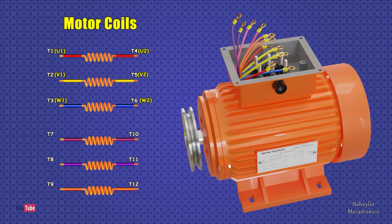The same happens with the terminals of the last three coils. It is designated from terminal 7 to 9 on one side. At the other end of the coils, terminals 10 to 12 are named if based on the NEMA standard, or have letters U, V, and W sub 3 and sub 4 if manufactured under the IEC standard.